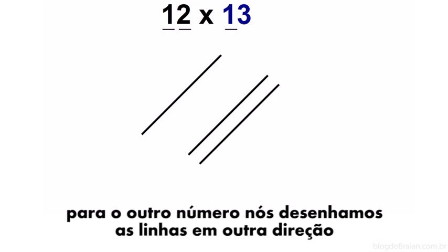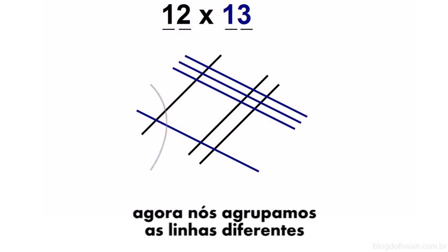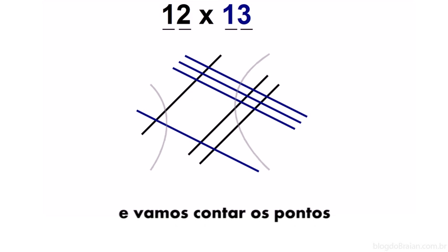For the other number, we'll draw lines in the other direction. Now we'll group together different lines and we'll count the dots.